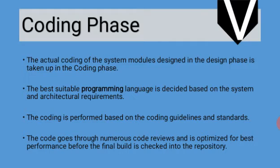The actual coding of the system is taken up in the coding phase based on the module design. A suitable programming language is selected based on the system design and requirements. Coding is performed based on coding guidelines and standards. The code can be reviewed multiple times, optimized for best performance, and checked before it is committed.